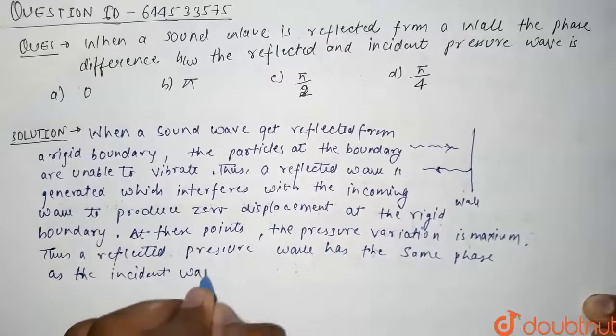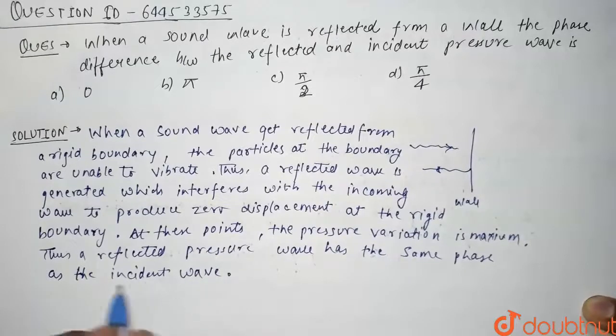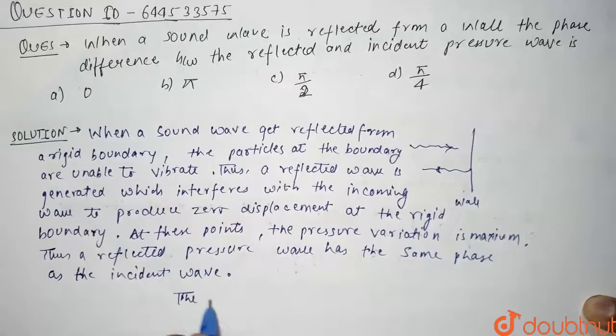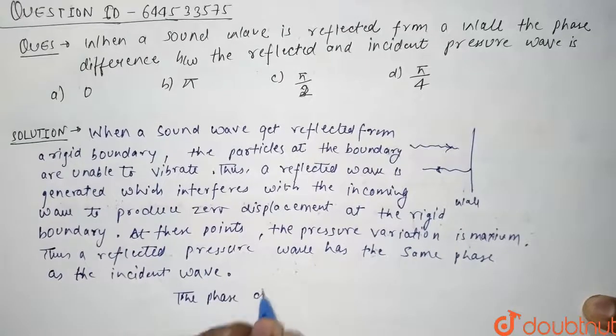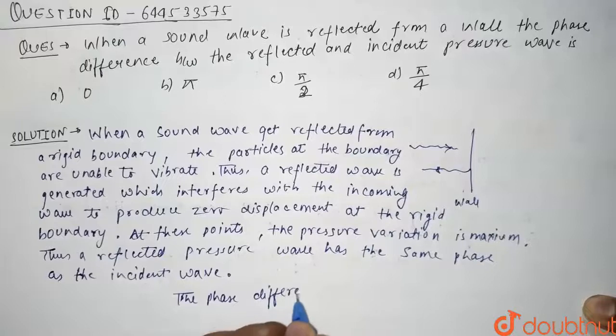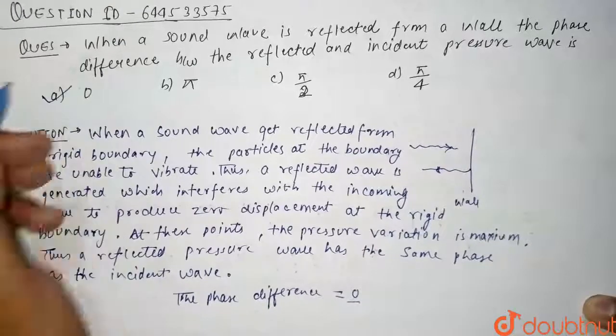Since the reflected pressure wave has the same phase as the incident wave, we can say that the phase difference is equal to zero. The correct option is option A, thank you guys.